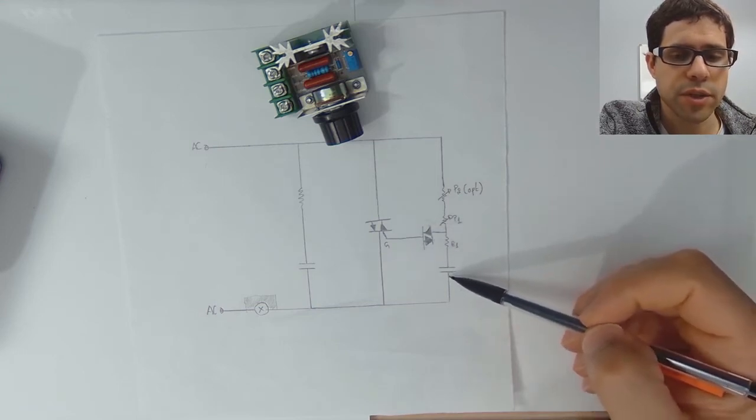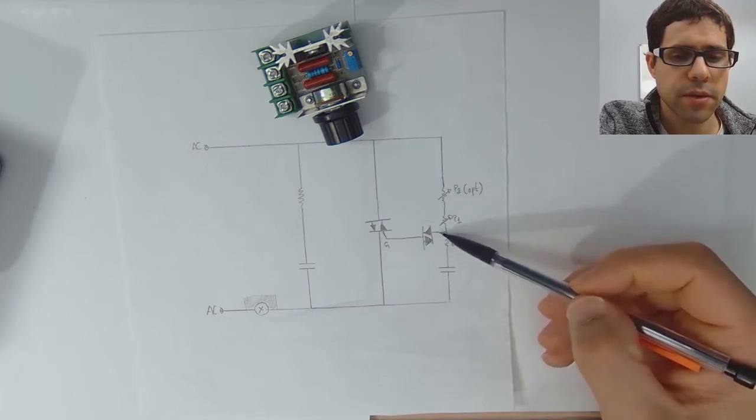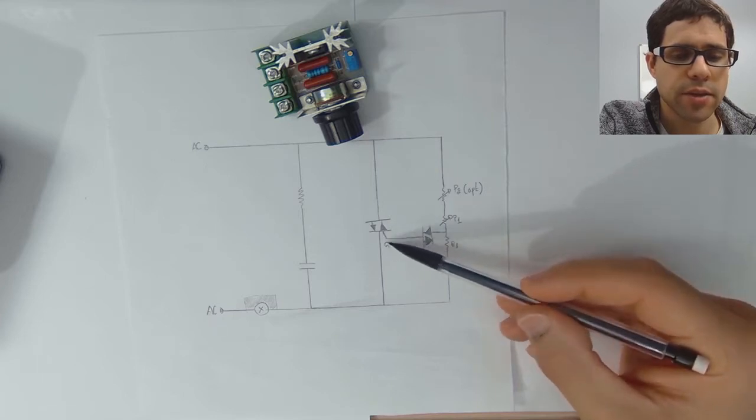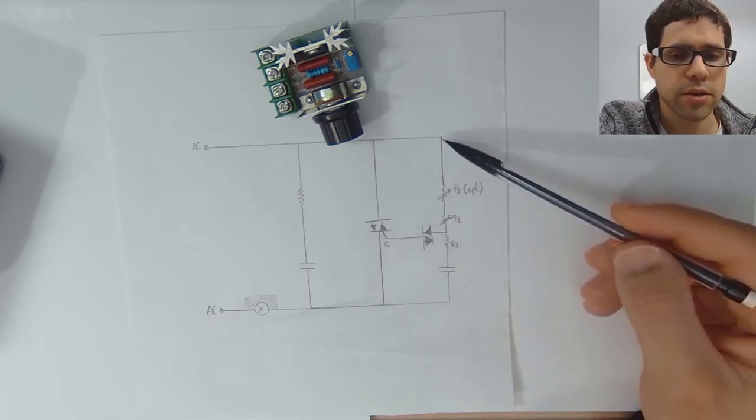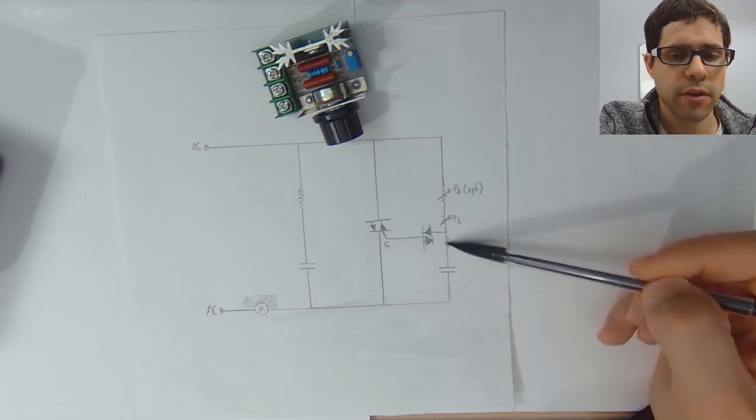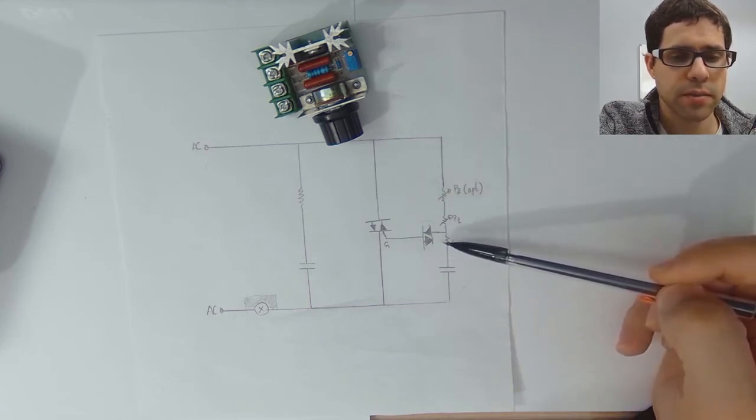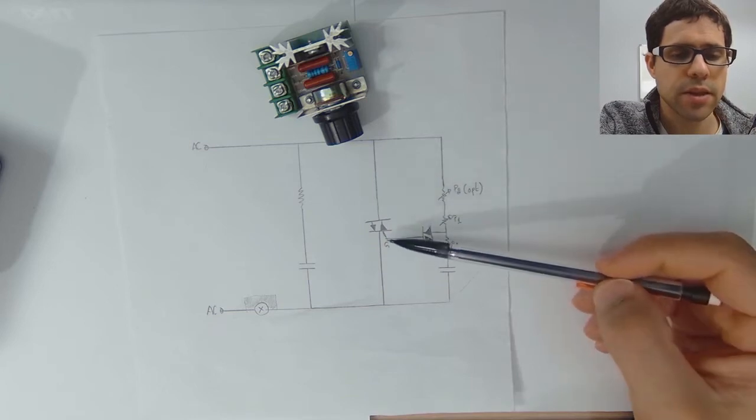All of the charge stored on this capacitor flows through this resistor and through the diac, and it engages the triac gate. The triac is in conduction. There's no longer any current flowing here, so this circuit is basically bypassed at this stage until it opens again.